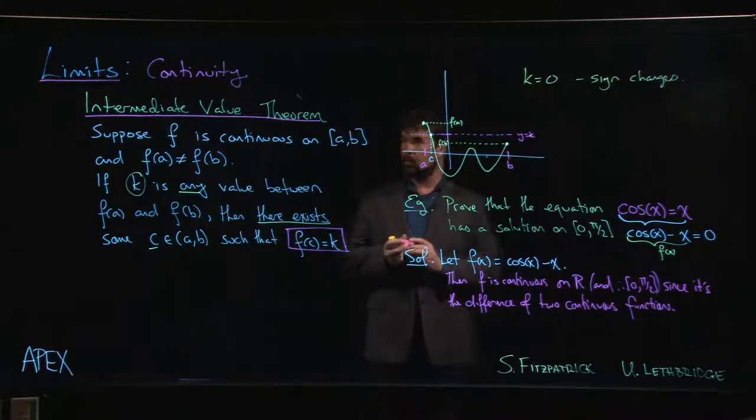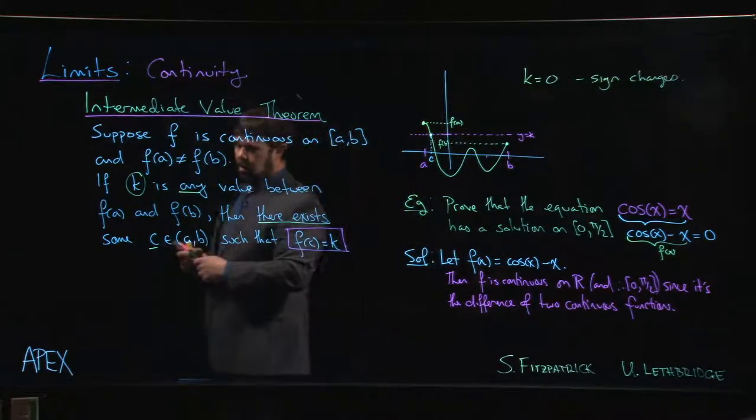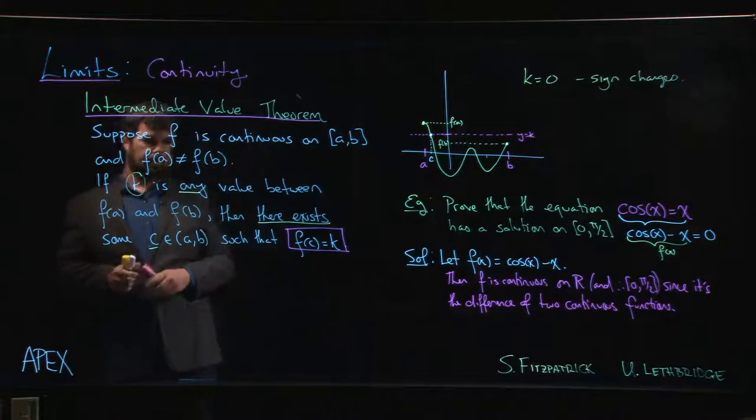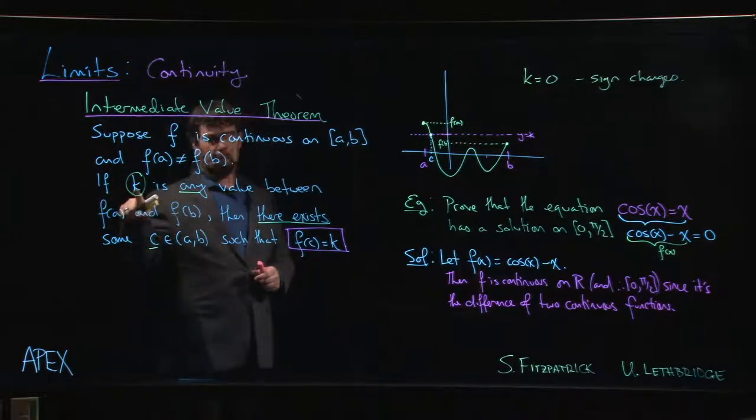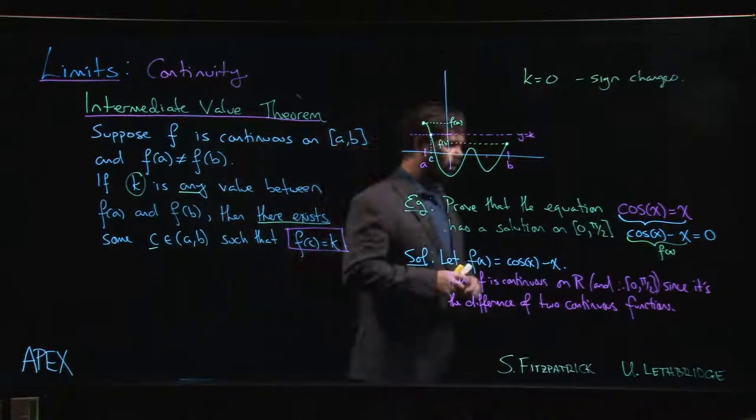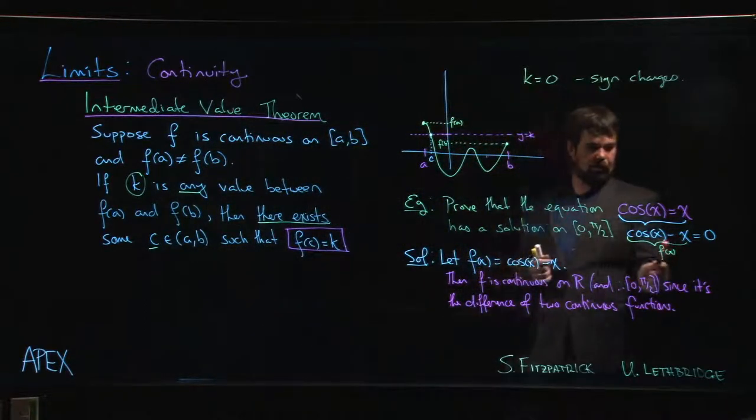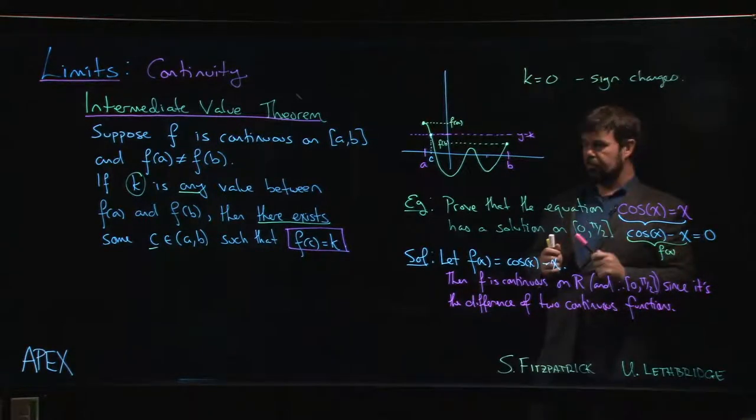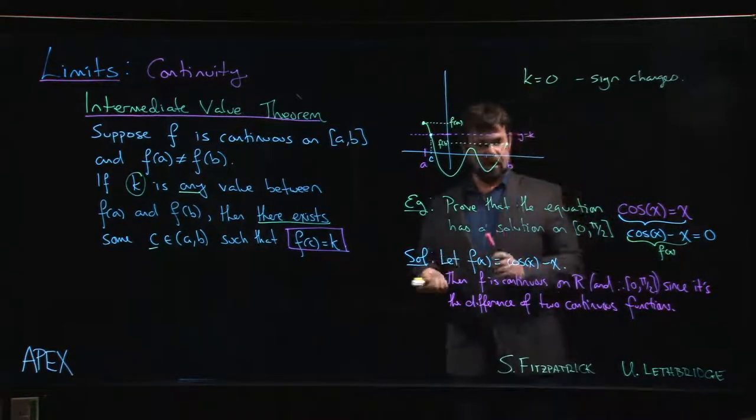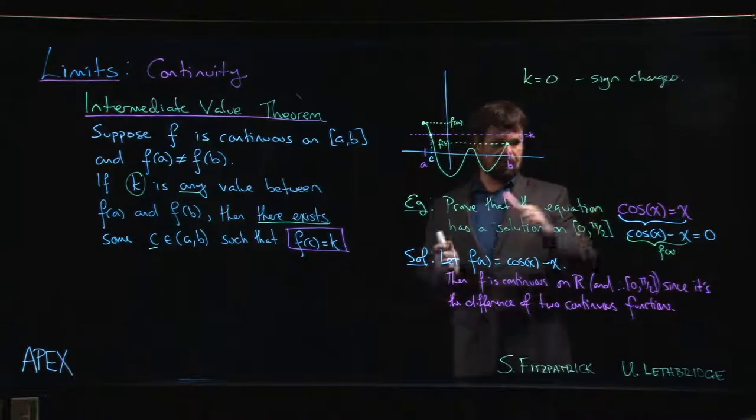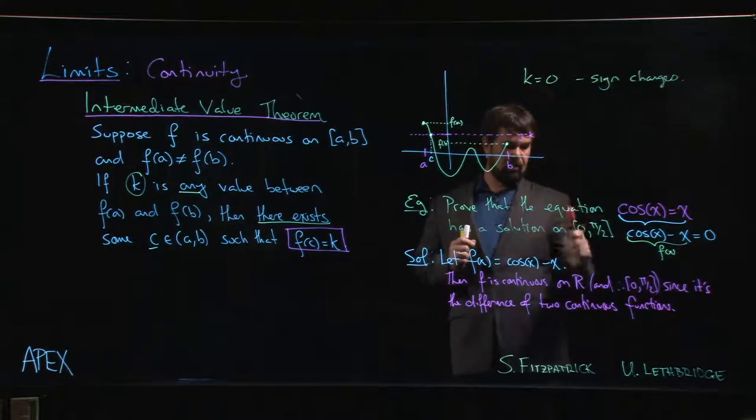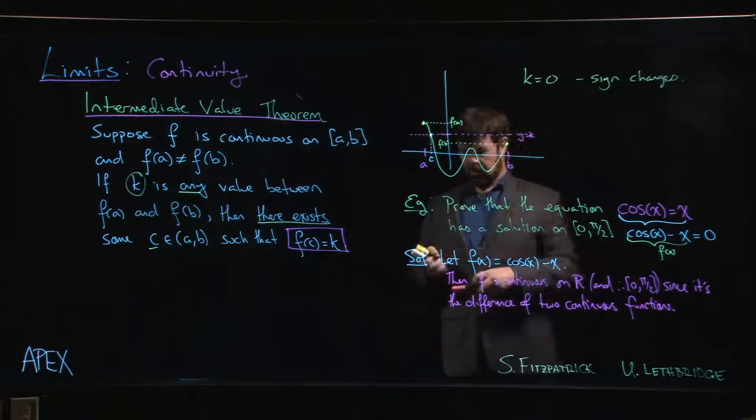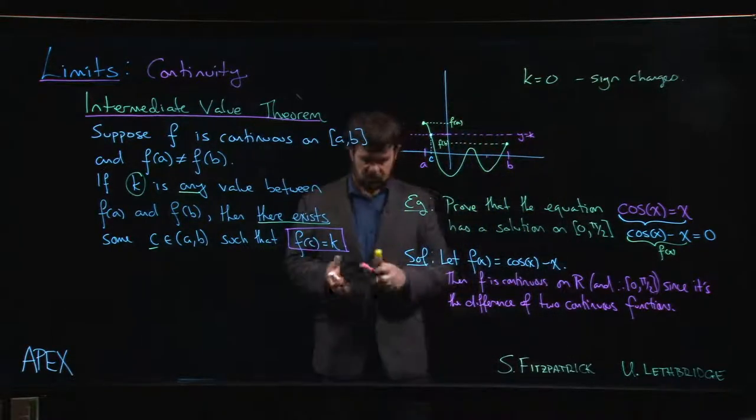Okay, so we've got the continuity part down. What else do we have to check? Well, we have to check that f(a) is not equal to f(b). But in particular, we're doing it in this k equals 0 setting, right? We want to show that this function is equal to 0 somewhere. So 0—we want to make sure that 0 is in between f(a) and f(b), in this case f(0) and f(π/2). So that means we need to know that at one of the two endpoints my function is negative, at the other it's positive. Well, that's simple enough. We just plug those numbers in.